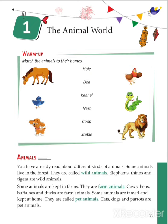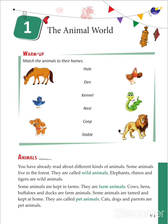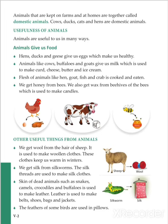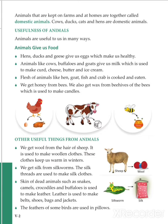Some animals are tamed and kept at home — they are called pet animals. Cats, dogs, and parrots are known as pet animals. Animals that are kept on a farm and at home are together called domestic animals. Cows, ducks, cats, and hens are domestic animals. We have seen four types: wild animals, domestic animals, farm animals, and pet animals.